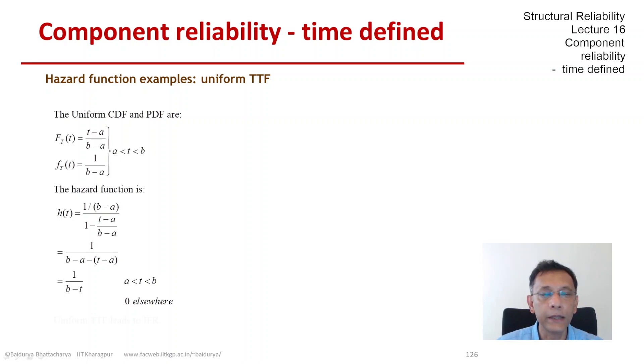And obviously, 1 over b minus t is an increasing function. So the uniform TTF leads to an increasing failure rate, an increasing hazard function.